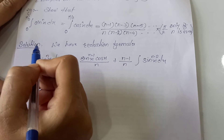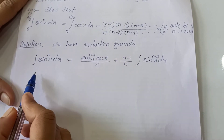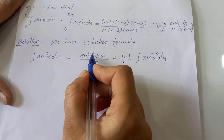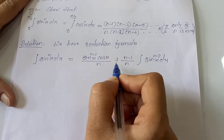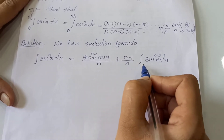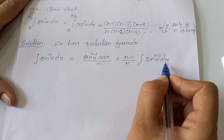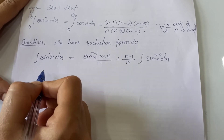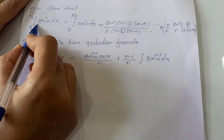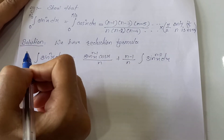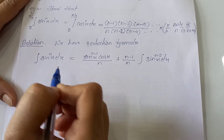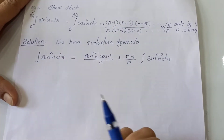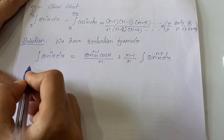We have a reduction formula for sin raised to n of x dx. It is: integration of sin raised to n of x dx equals sin raised to (n−1) times cos x upon n, plus (n−2)/n times the integration of sin raised to (n−2) x dx. Here we do not want the indefinite integral; we want integration with limits from 0 to pi by 2. The reduction formula has no limits, but the example has limits from 0 to pi by 2.